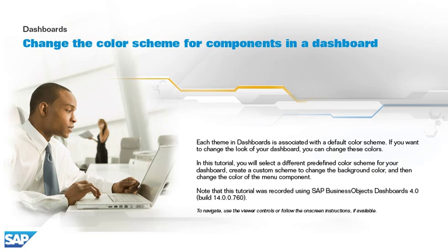Each theme and dashboard is associated with a default color scheme. If you want to change the look of your dashboard, you can change these colors. In this tutorial, you will select a different predefined color scheme for your dashboard, create a custom scheme to change the background color, and then change the color of the menu component. Note that this tutorial was recorded using SAP BusinessObjects Dashboards 4.0, build 14.0.0.760.